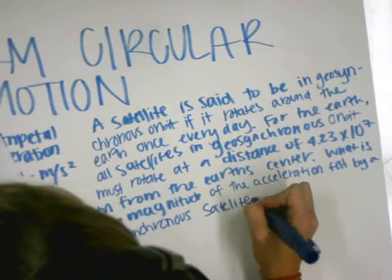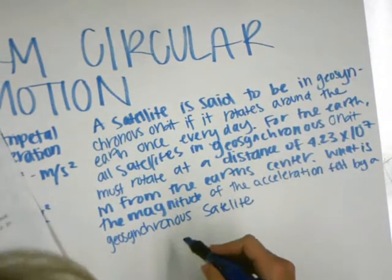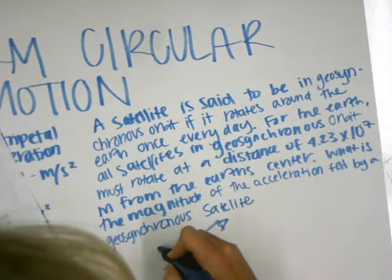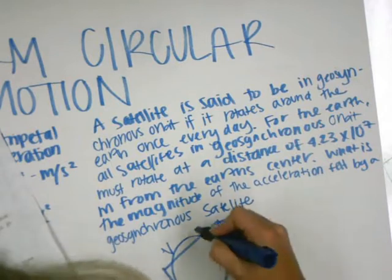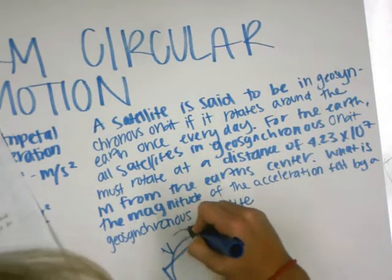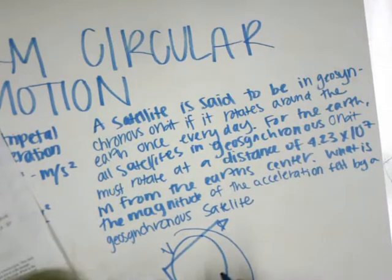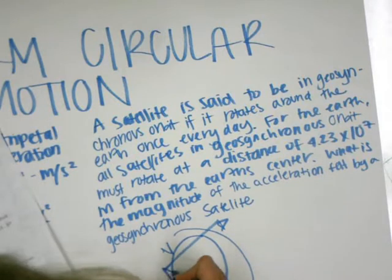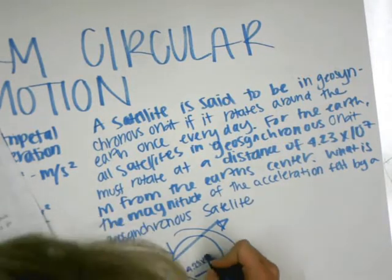Okay, so here's our orbit. Velocity is moving this way. Acceleration this way. And it's moving around in orbit. We have our centripetal acceleration going here. It's 4.23 times 10 to the 7 meters away from the Earth's center.